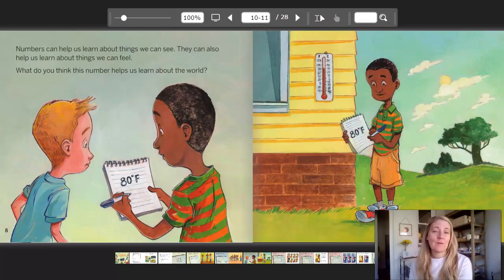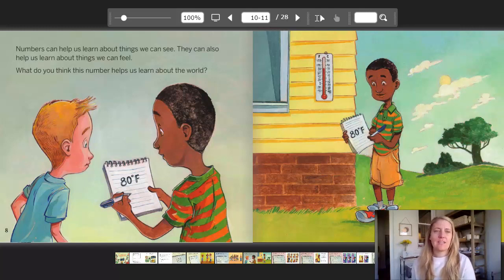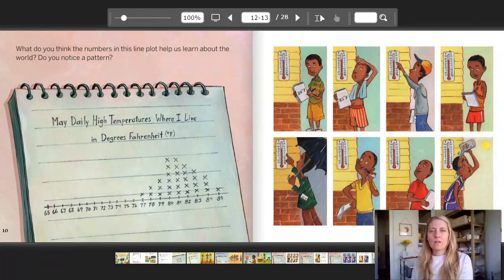Numbers can help us learn about things we can see. They can also help us learn about things we can feel. What do you think this number helps us learn about the world? It says 80 degrees with a capital F for Fahrenheit. What do you think the numbers in this line plot help us learn about the world?